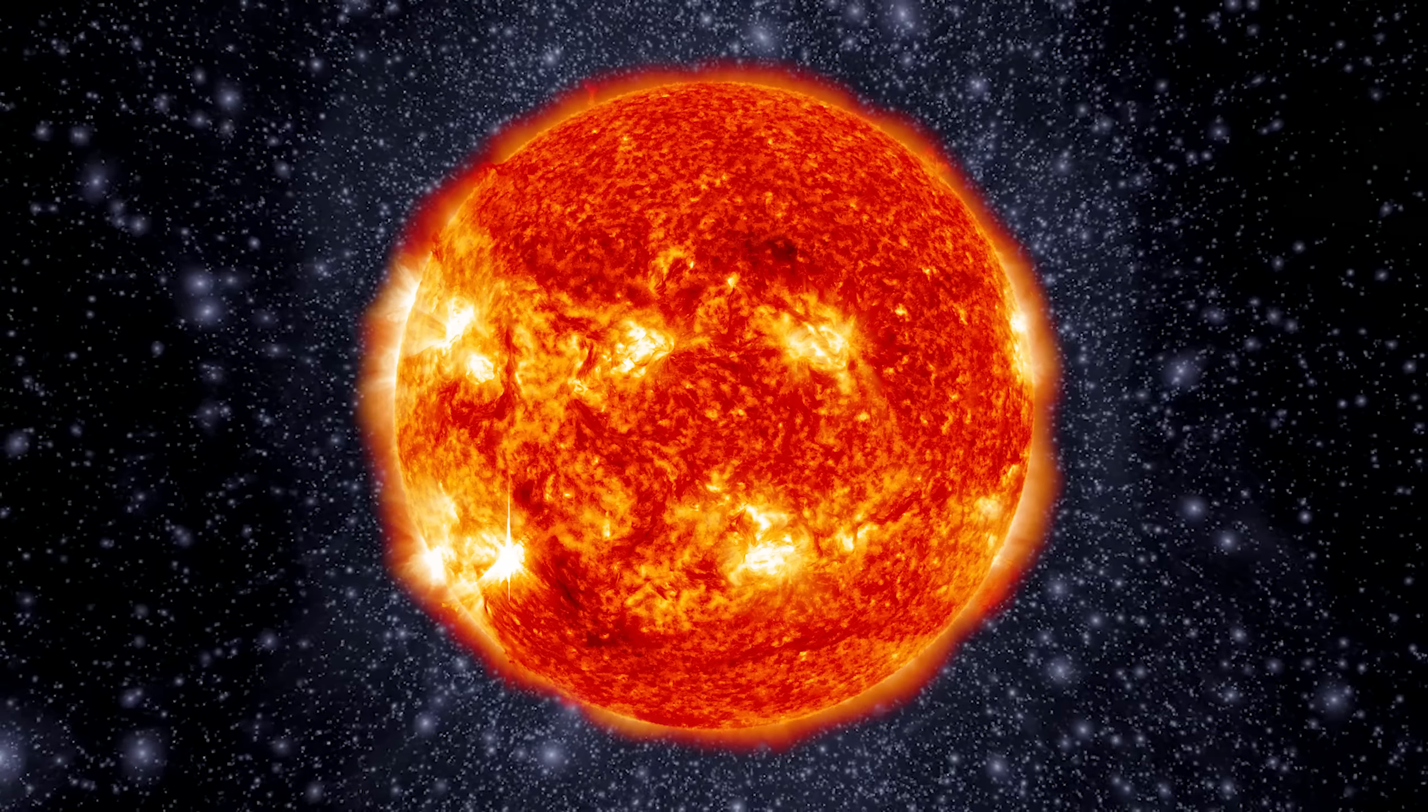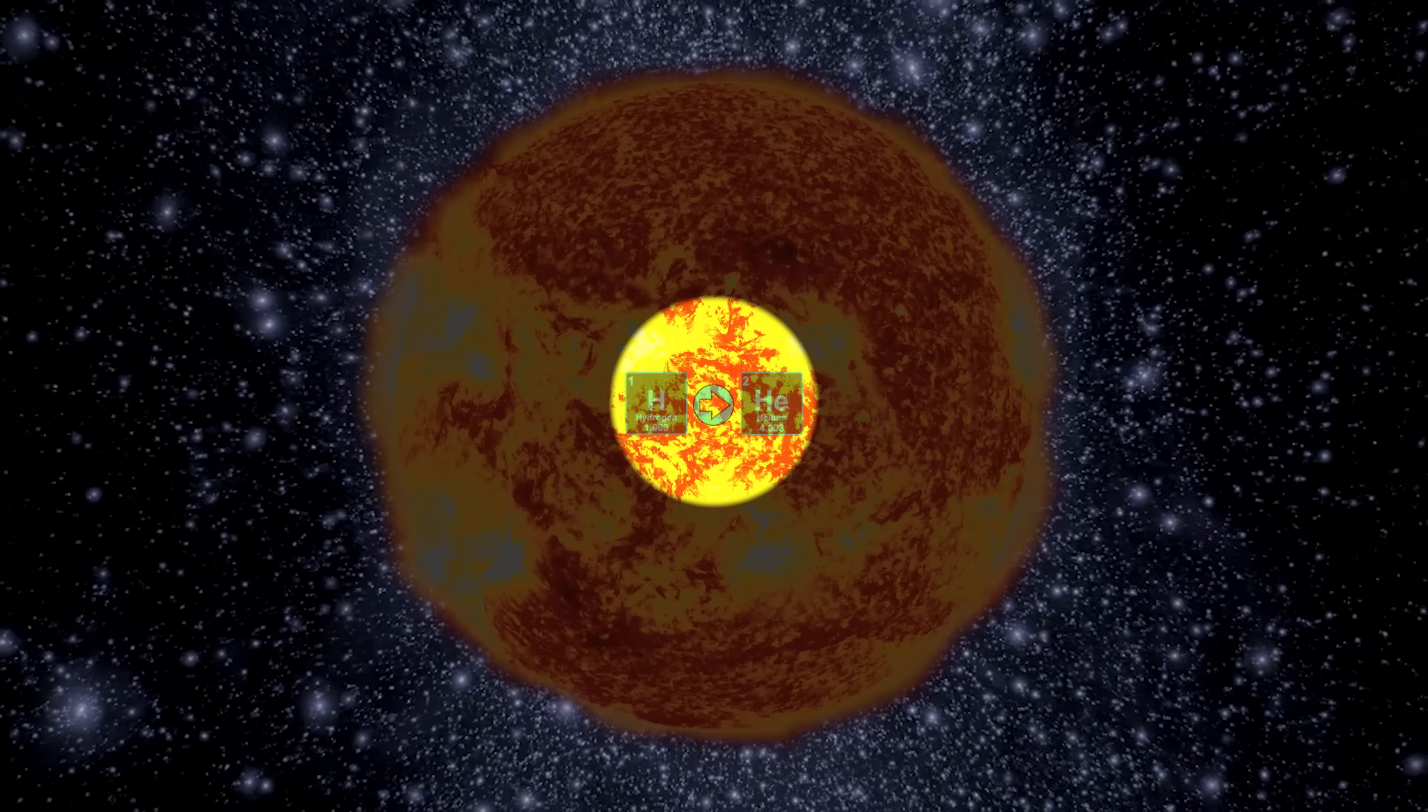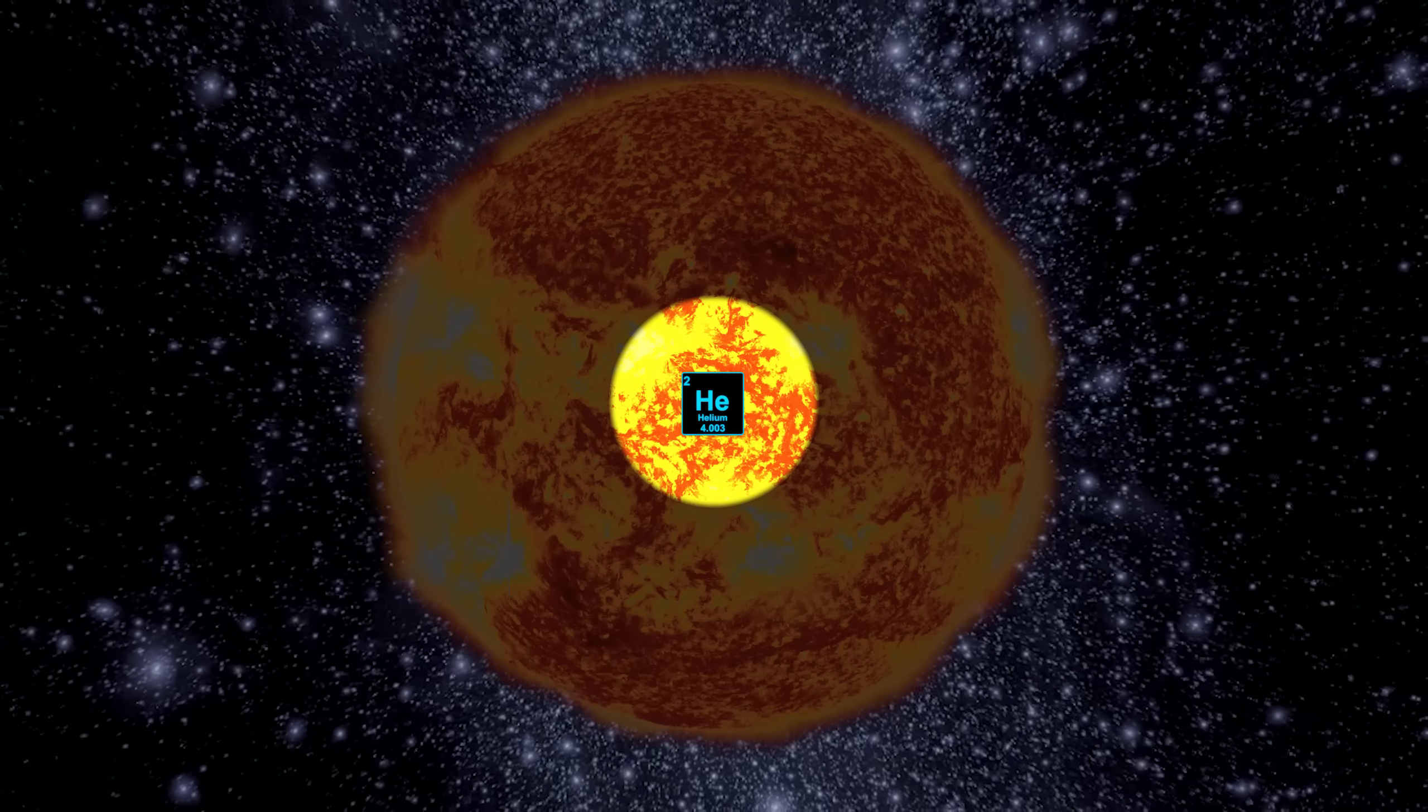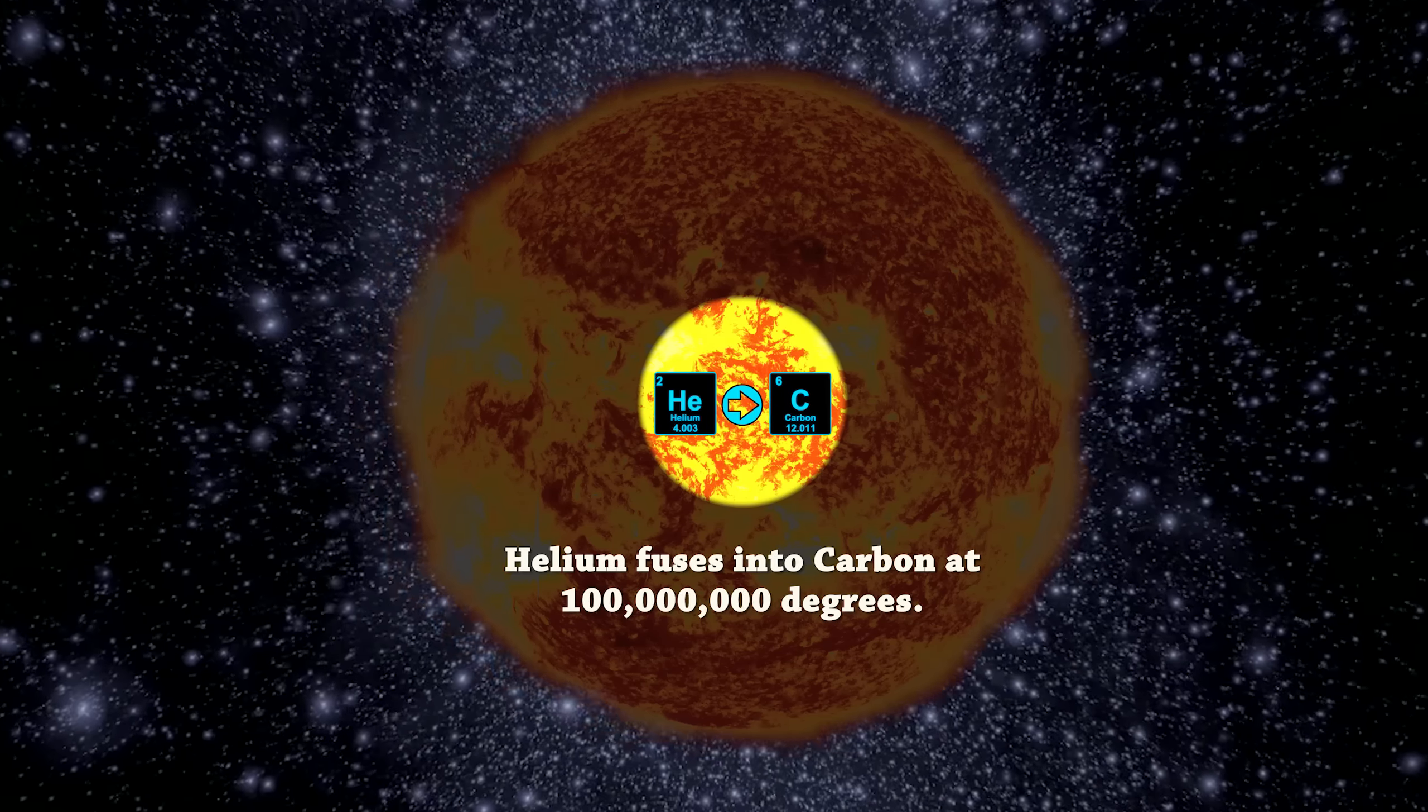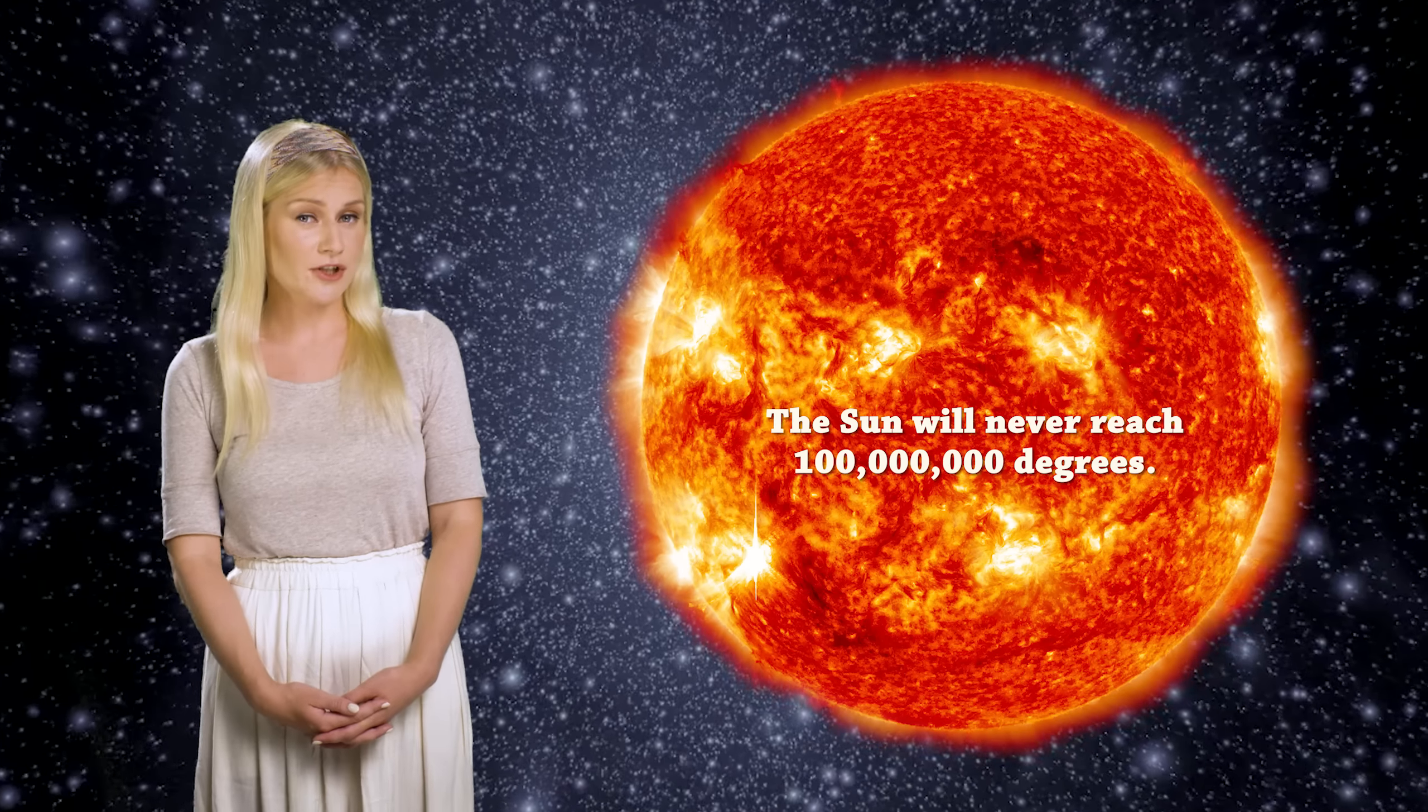When the density and pressure is high enough in the core, all the helium that has been produced can start to fuse into carbon. This happens at a temperature of a hundred million degrees. However, in a star like our Sun, there will never be extreme enough conditions for carbon to start to fuse.